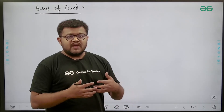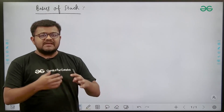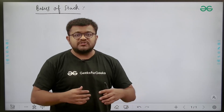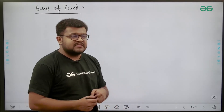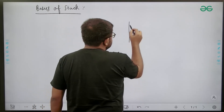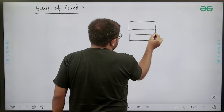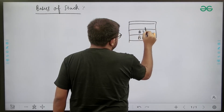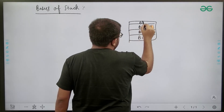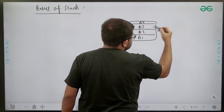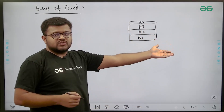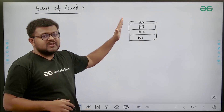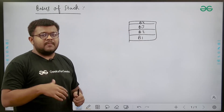So what is basically a stack? Stack, as the name suggests in day-to-day life, what we see — we see a stack of books or stack of plates. There are some books which are kept: book one, book two, book three, book four. There are some plates kept: plate one, plate two, plate three. We call this a stack of books.